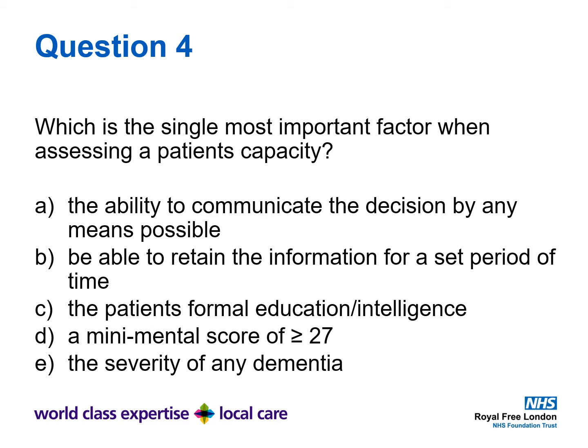Question 4. Which is the single most important factor when assessing a patient's capacity? A: The ability to communicate the decision by any means possible. B: Be able to retain the information for a set period of time. C: The patient's formal education or intelligence. D: A mini mental score of over 27. E: The severity of any dementia.